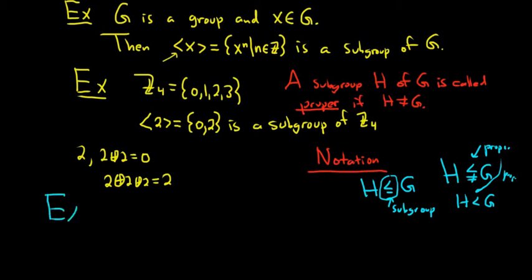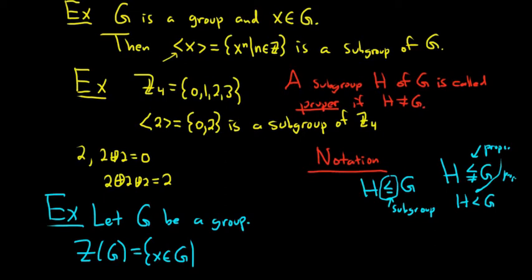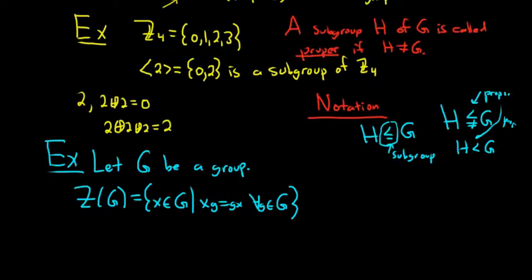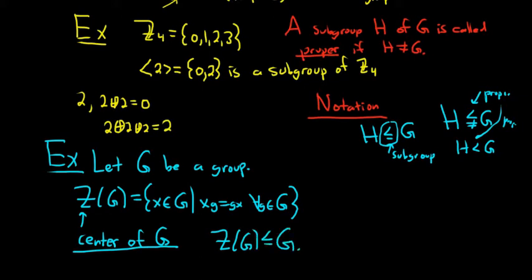Here's another one that's pretty interesting. So let G be a group. This one's pretty nice. And we're going to let Z of G be equal to the set of all X's in G such that XG is equal to GX for all G in G. So it's the set of all the X's in G that commute with every element in G. So this is called the center of G. And it is a subgroup. So Z(G) is a subgroup of G.